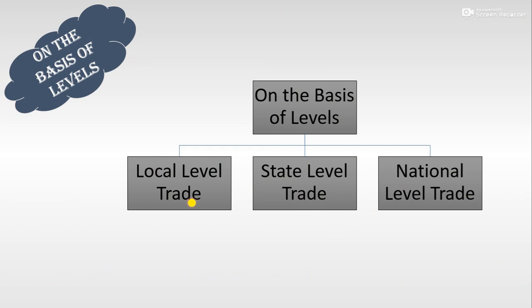Now come to trade on the basis of levels. Levels ke base par hum trade ko 3 categories mein divide karte hain. First: local level trade — jo within the district ho raha hai. Ek hi district ke jo cities hain, villages hain, unke beech mein jo trade ho raha hai. Yeh trade mostly milk, vegetables, fruits, sweets — perishable goods ka trade hota hai, jo within the district hota hai.